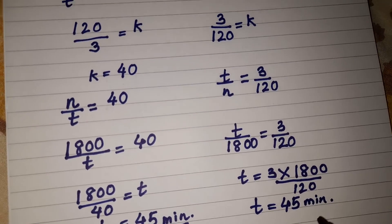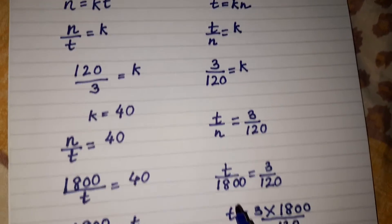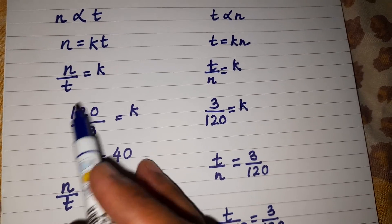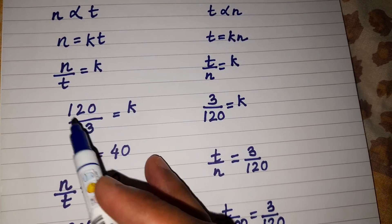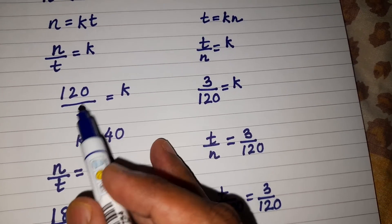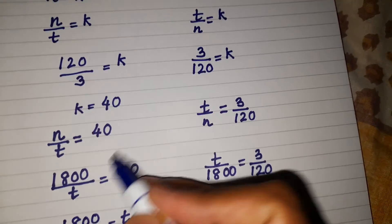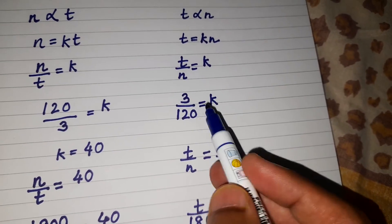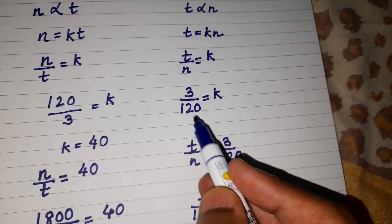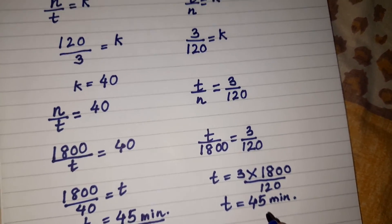Solving this, we get t = 45 minutes — the same answer. So don't worry; whichever way you write the direct proportion, your answer will come out the same. It is easier to divide when the bigger number is on top and the smaller number is in the denominator. Keep the fraction as it is and continue to solve, otherwise it will come in decimal form.